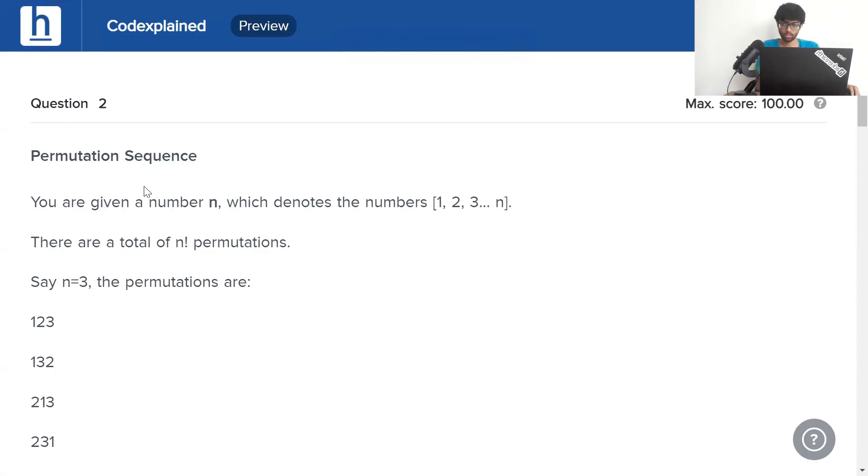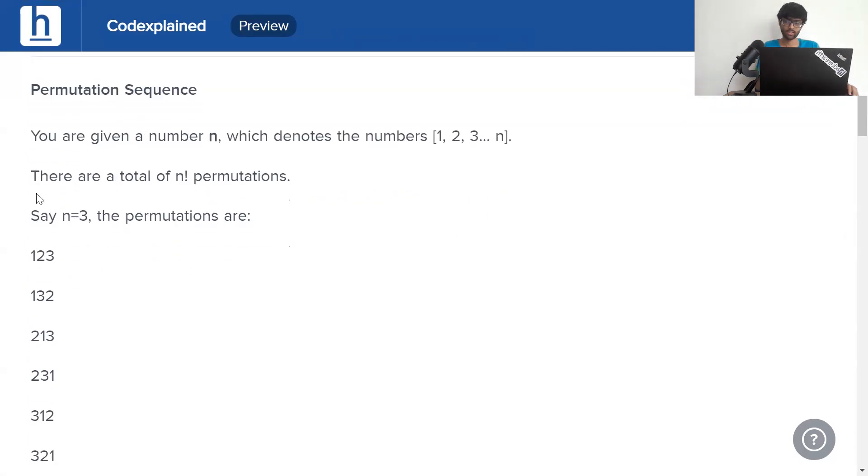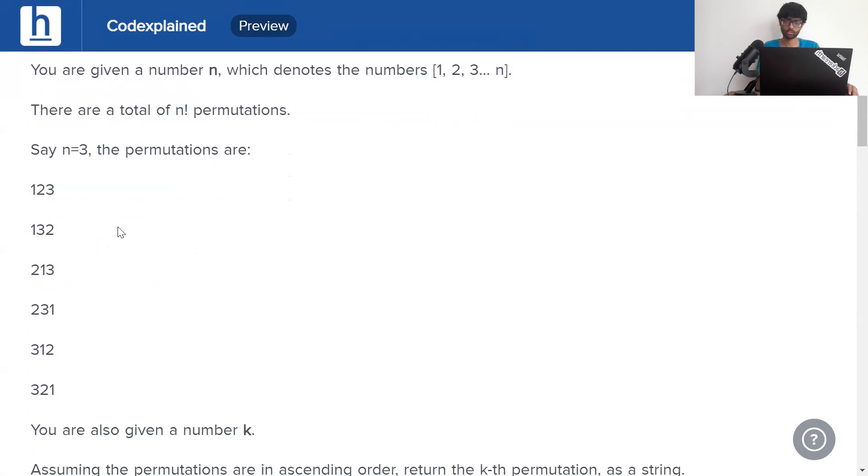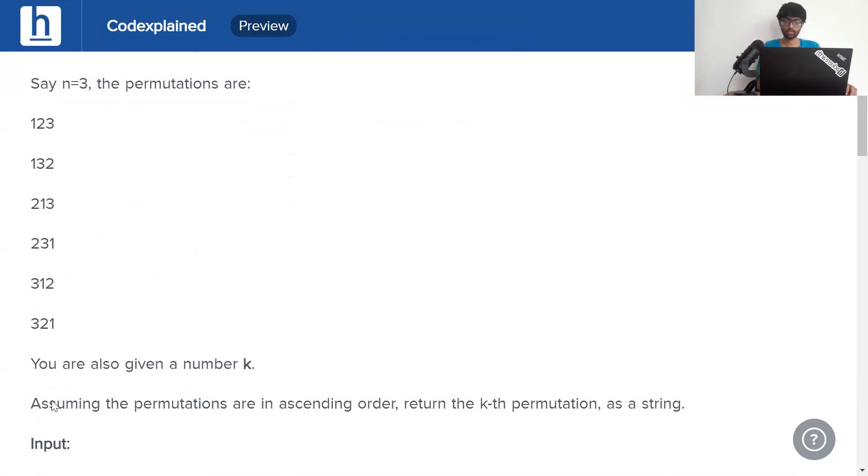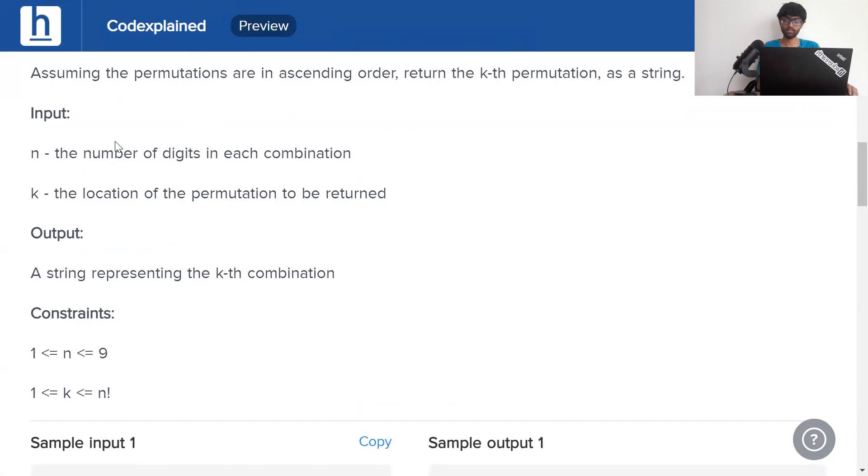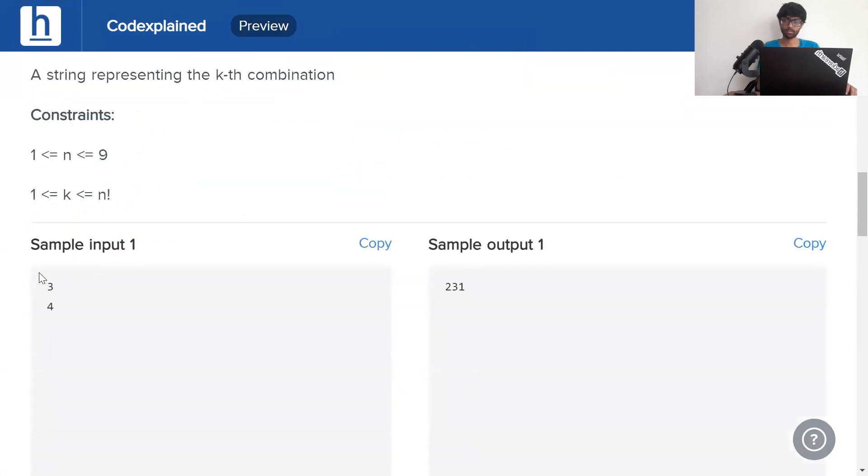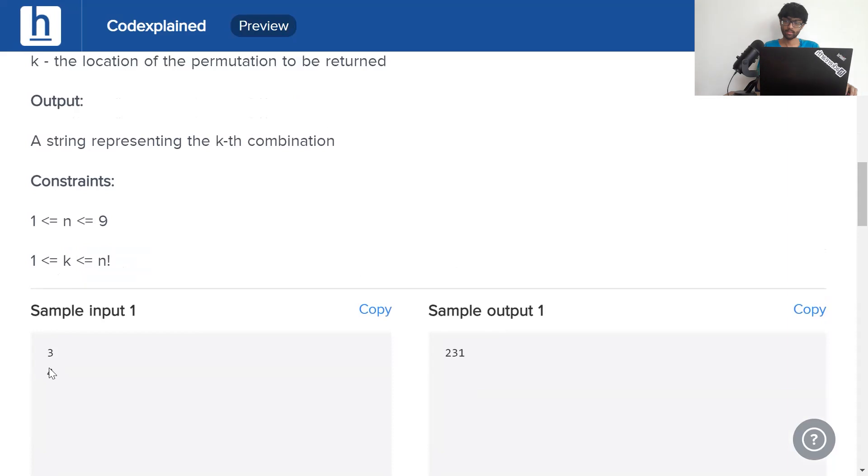Permutation Sequence: You're given a number n which denotes the numbers 1, 2, 3, 4, 5, 6 up until n. There are a total of n factorial permutations. They've given an example here. Say n is 3, the permutations are 123, 132, 213, 231, 312, 321. You're also given a number k. Assuming the permutations are in ascending order, return the kth permutation as a string. So we can see our input is n and k. n is the number of digits (1, 2, 3 starting from 1). k is the location; k is between 1 and n factorial.